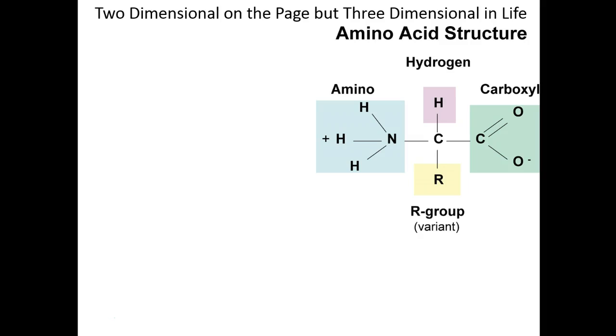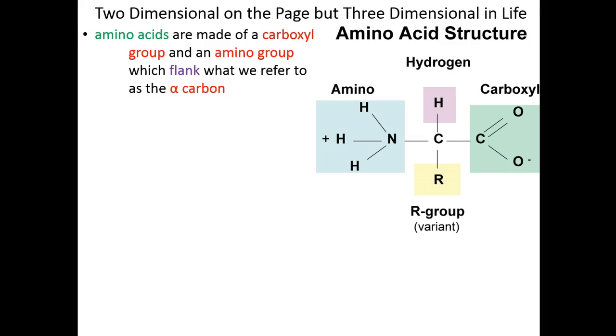So here is an amino acid, a generic amino acid in its basic structure. Amino acids are made up of carboxy groups. That's what we see here. Amino groups. That's what we see here. And each of these flank what is referred to as the alpha or central carbon. This is true of all amino acids. That alpha carbon is also bound to, as we see here, a proton. That's also true of all amino acids.